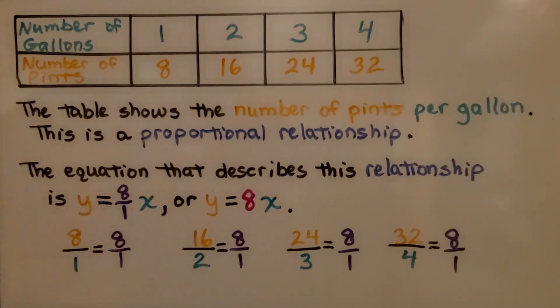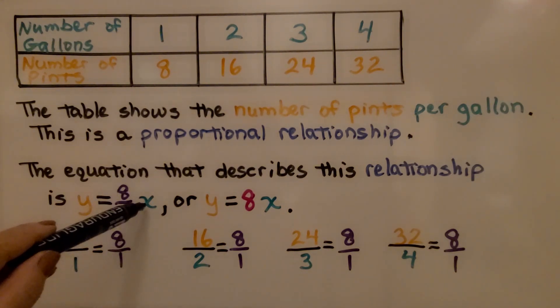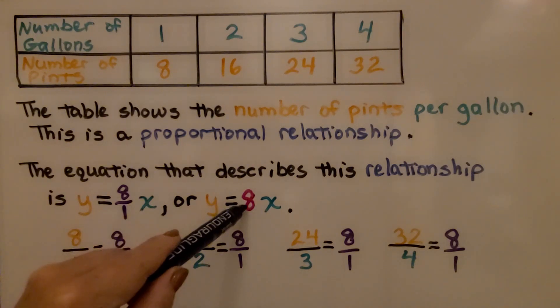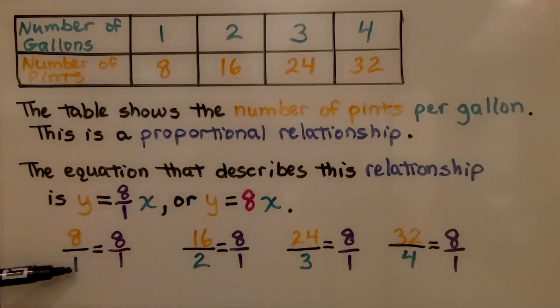Take a look at this table. We have number of gallons and we have number of pints. The table shows the number of pints per gallon. This is a proportional relationship. The equation that describes this relationship is y equals the ratio 8 to 1, x, or y equals 8x.